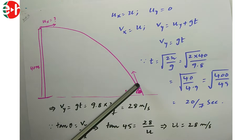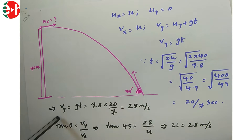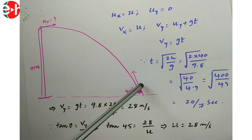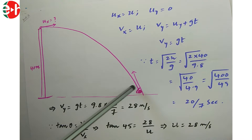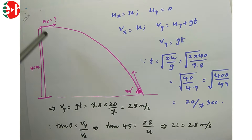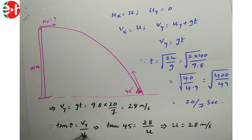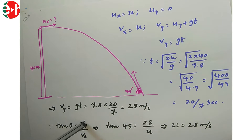Since it hits the ground at 45°, we use tan θ = Vy/Vx, where Vx is the horizontal component (equal to Ux). At 45°, tan 45 = 1, so Vx = Vy. If Vy is known, Ux is automatically known.